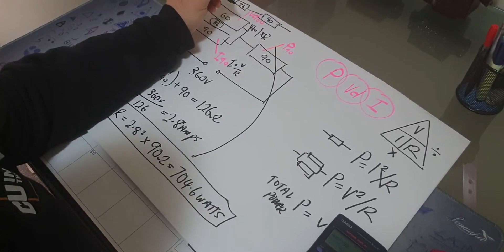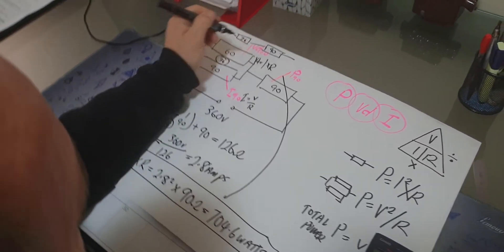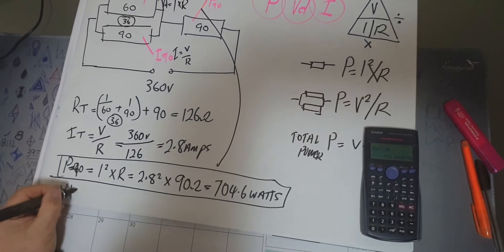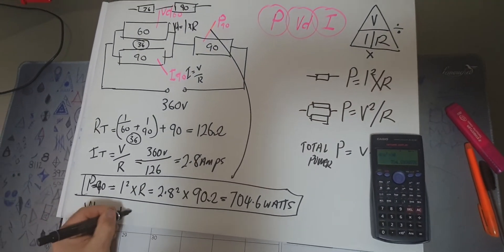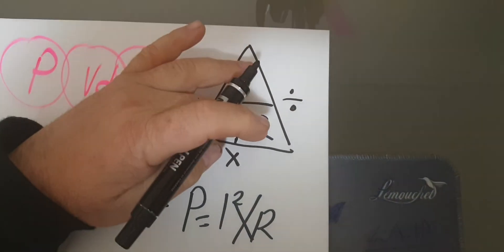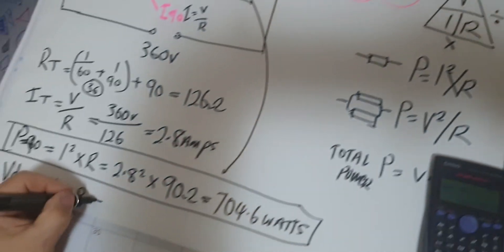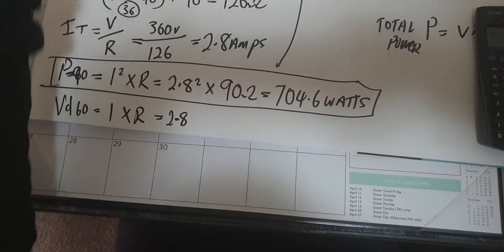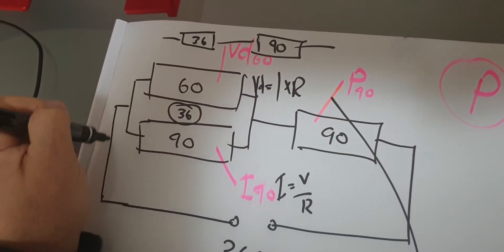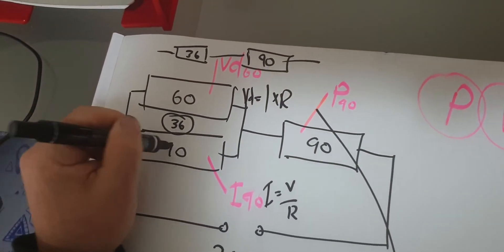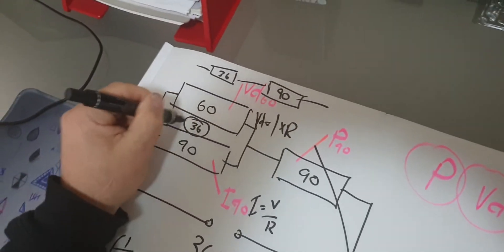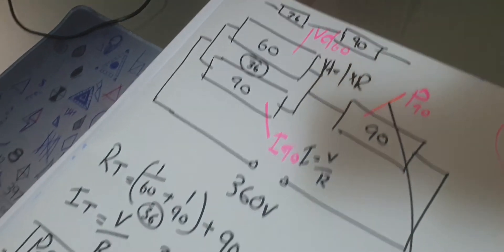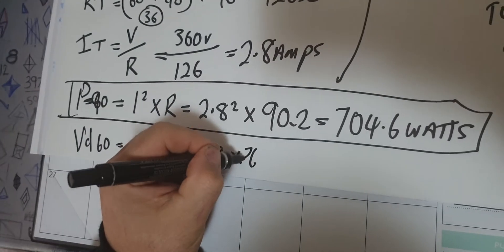To find voltage drop of the 60-ohm resistor: VD equals I times R from Ohm's law. The key here is that 2.8 amps is the total current but flows through both parallel resistors together, so I need to use the combined parallel value of 36 ohms as the common denominator — 2.8 times 36.